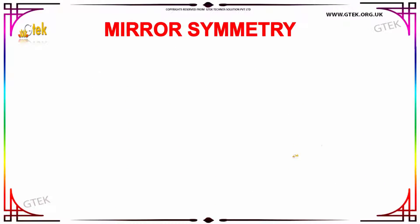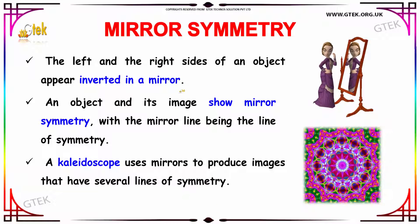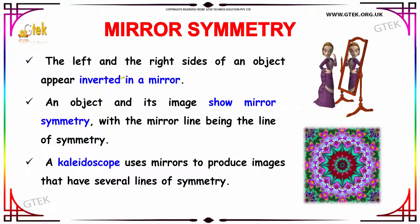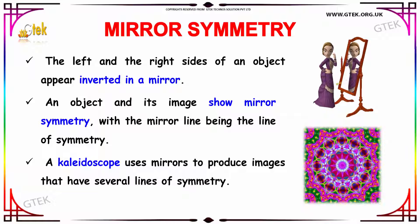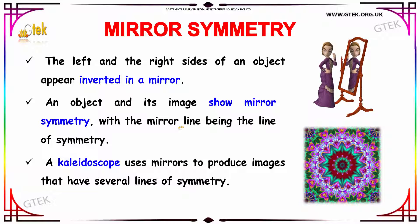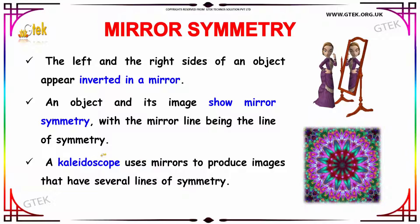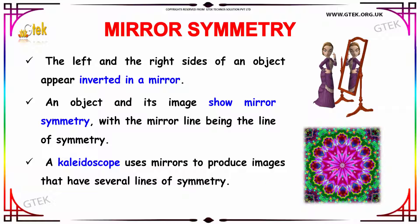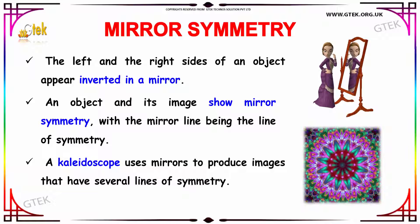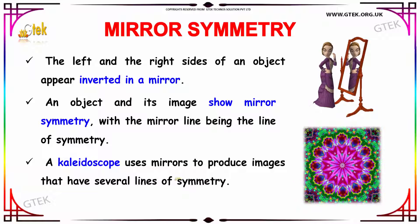The left and the right sides of the object appear to be inverted in a mirror. The object and the image shown in the mirror have symmetry, with the mirror line being the line of symmetry. One of the most common examples you can find for mirror symmetry is a kaleidoscope. It uses mirrors to produce images that have several lines of symmetry, showing distinguishing and beautiful images.